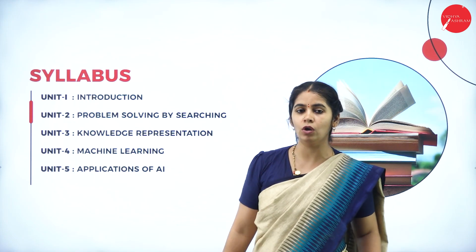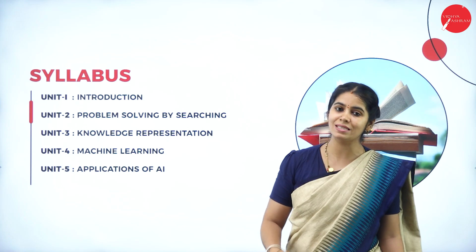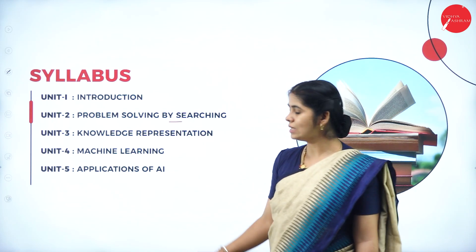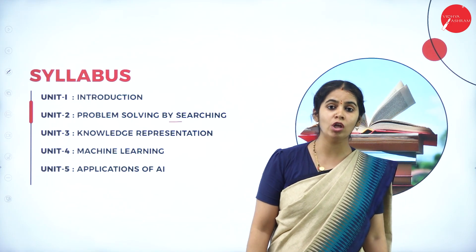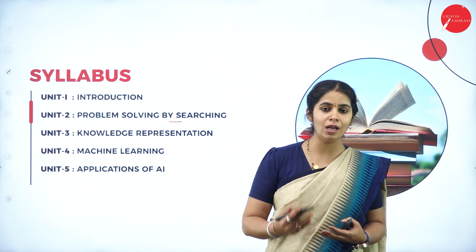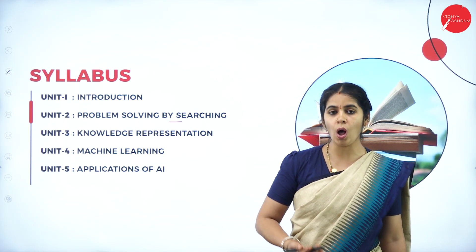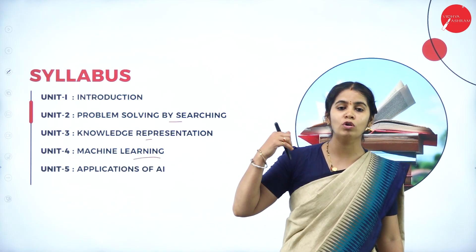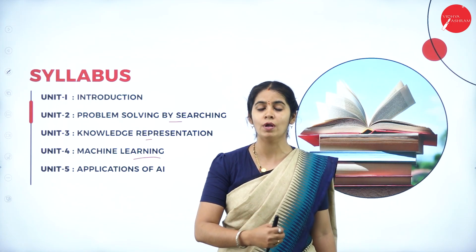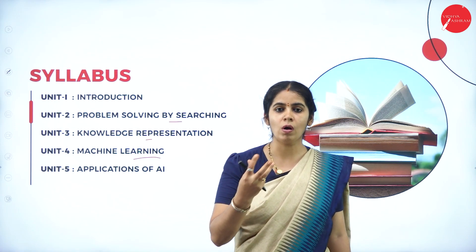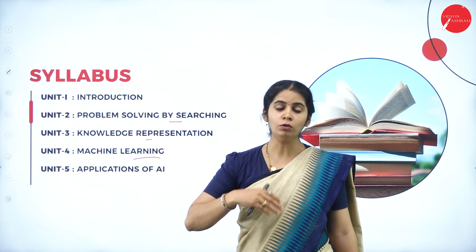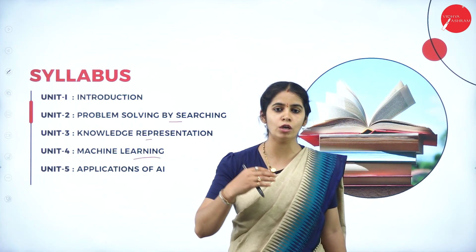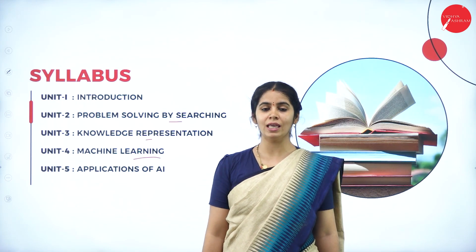In the second unit, we cover problem solving by searching — there are different searching techniques to solve a particular problem, and we will discuss what they are. In unit 3, we discuss knowledge representation, since knowledge is the base for intelligence. In unit 4, we discuss how a machine is going to learn by itself — that is the core concept of AI — how many types of learning exist. In unit 5, we discuss the applications of AI and where and how efficiently we are using AI in different fields.